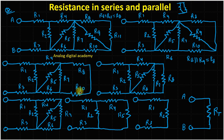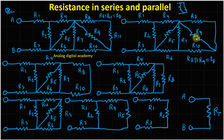Now this R8 (the parallel equivalent) is in series with R10. You can see this is the parallel combination result, and now this branch current and the other branch current flow together through R10. So this equivalent resistance R8 is in series with R10. R8 is the equivalent of the original R8 parallel R9, now placed in series with R10. This is a series combination because the same current flows through both R8 and R10.